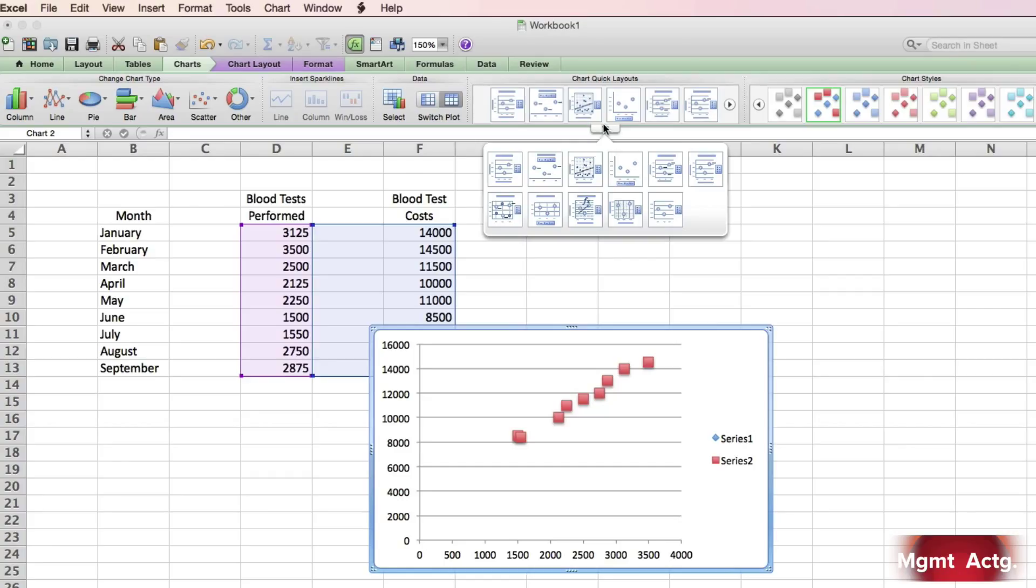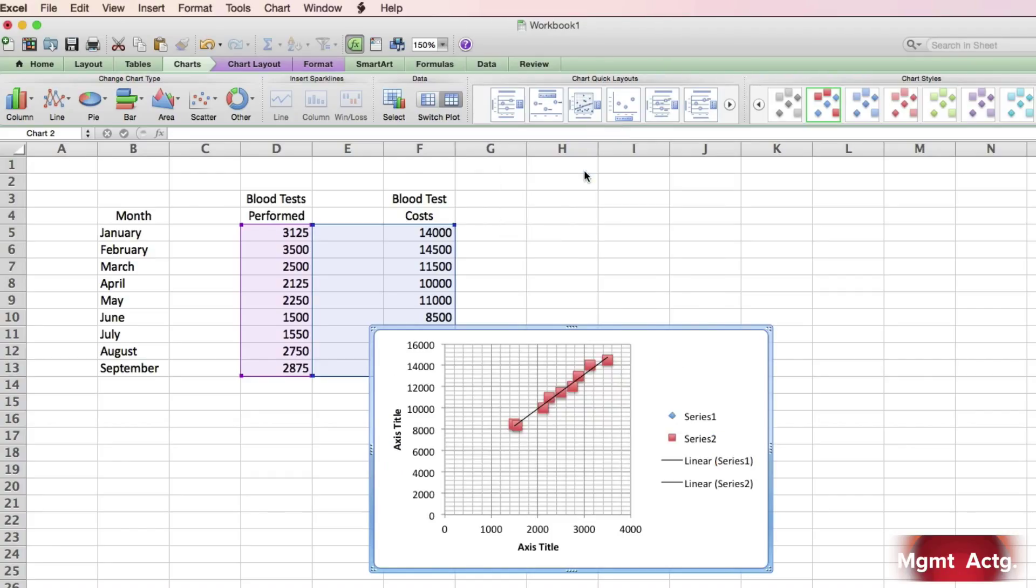So, now we want to add a trend line, so you go to the quick layouts, arrow down, and look for the one that has the line through it like this, layout 3 on mine, and there we go. Four clicks of the mouse, and we've got our answer.